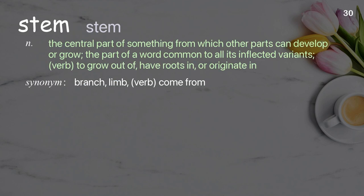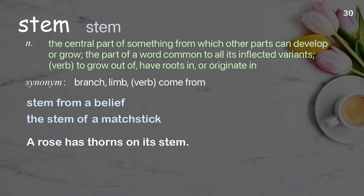Stem: the central part of something from which other parts can develop or grow; the part of a word common to all its inflected variants. Verb: to grow out of, have roots in, or originate in. Examples: stem from a belief, the stem of a matchstick. A rose has thorns on its stem.